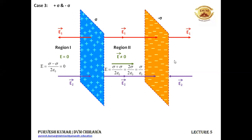In region 3 it will be again 0, because E1 is equal to E2 and they both are acting in opposite directions. We have sigma upon 2 epsilon naught minus sigma upon 2 epsilon naught, which equals 0.